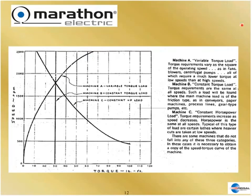A typical application of a variable torque load is a blower or fan. If you turn the fan blades when the fan is off, you can turn them very easily with one finger. But as the motor turns the fan up to speed and air starts to blow, now you have power. Machine B is a constant torque load — the constant torque load is not speed-dependent; it doesn't change with speed because the load is always impressed on the shaft at the same value. A typical example would be a conveyor: if you put 100 pounds on a conveyor, the motor has to move 100 pounds regardless of speed.